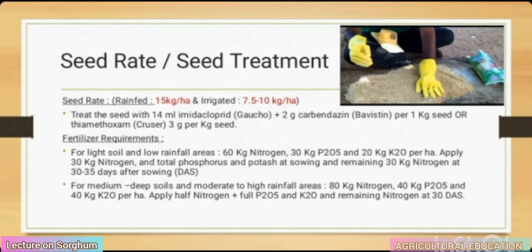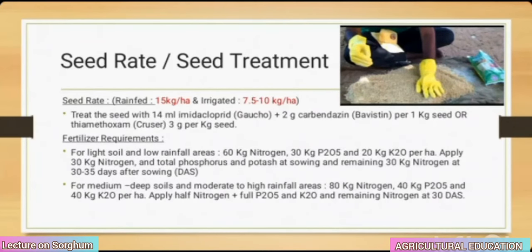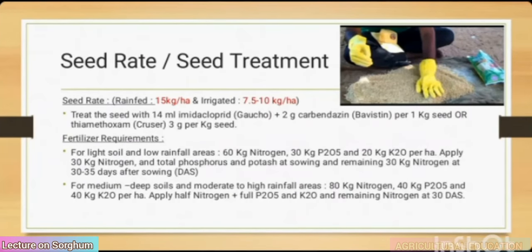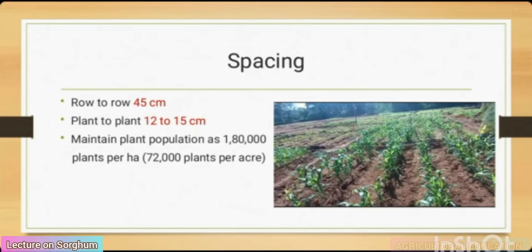For medium or deep soils and moderate to high rainfall areas: 80 kg nitrogen, 40 kg P₂O₅ and 40 kg K₂O per hectare. Apply half nitrogen plus full P₂O₅ and K₂O at basal and remaining nitrogen at 30 days after sowing. Spacing: row to row 45 cm, plant to plant 12 to 15 cm. Maintain plant population of 1,80,000 plants per hectare (72,000 plants per acre).